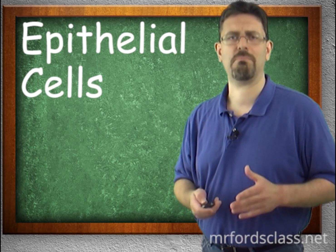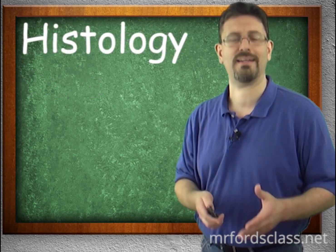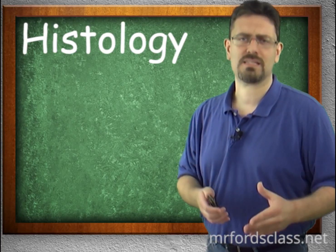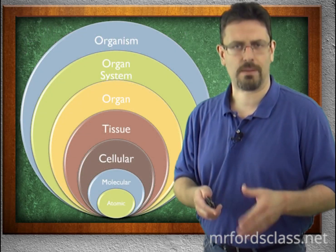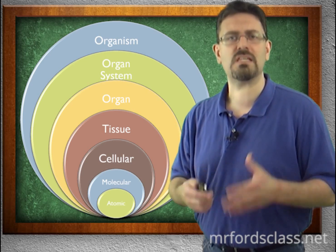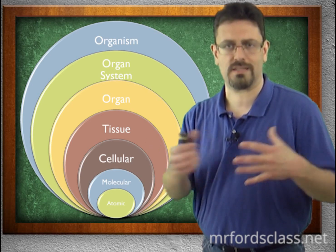Let's talk about what we mean by histology. Histology is defined as a branch of anatomy that deals with the minute structure of animal and plant tissues as discernible with the microscope. If you remember from lesson one when we talked about levels of organization — subatomic, atomic, cells, tissues — this is what we're talking about.